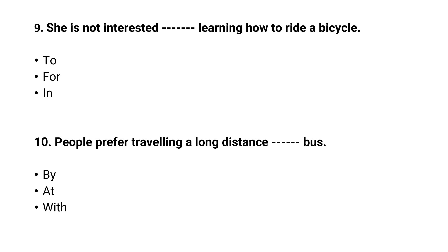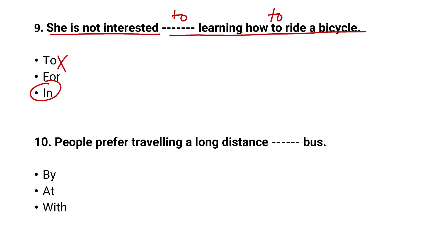The ninth question: 'She is not interested dash learning how to ride a bicycle.' The correct answer is 'in' — 'she is not interested in learning how to ride a bicycle.' The options 'to' and 'for' both sound wrong in this context, so option C, 'in,' is correct.